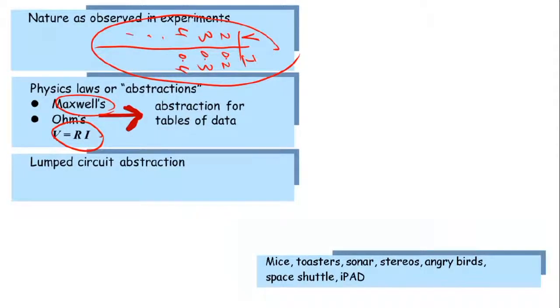So remember, we are engineers, and our goal is to build these systems at the end that will help humanity. So what we will do is we will make some assumptions that you will see in the rest of this lecture. And by making certain classes of assumptions, we will build what is called a lumped circuit abstraction.